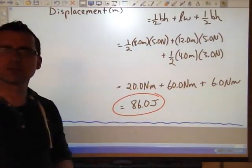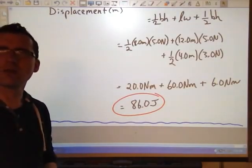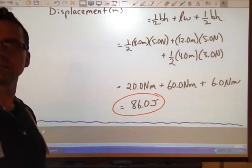So the first section, 20.0 newton meters, plus the second section, 60.0 newton meters, plus the last section, 6.0 newton meters. And we get 86. 86.0 joules. So determining work graphically when the force is changing.